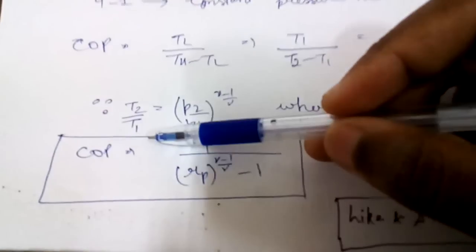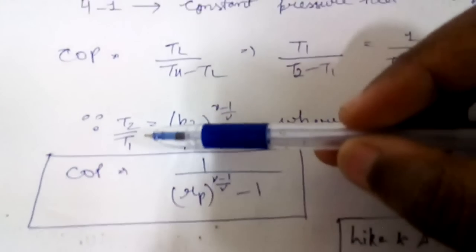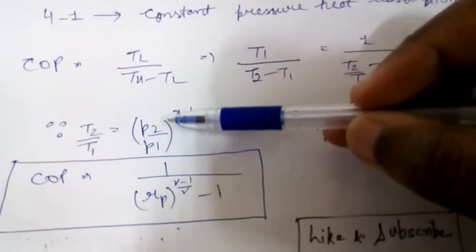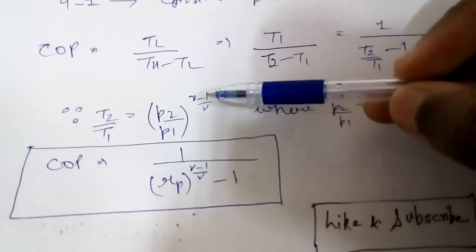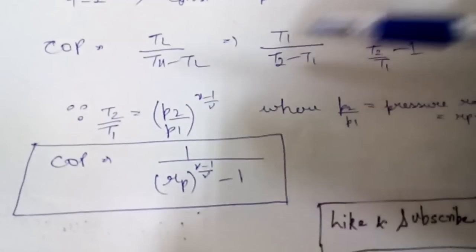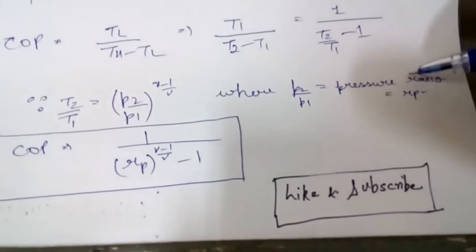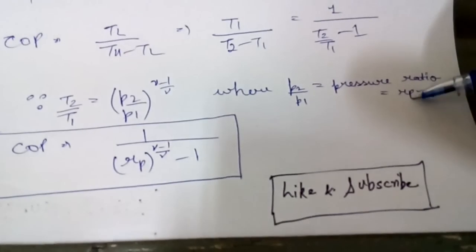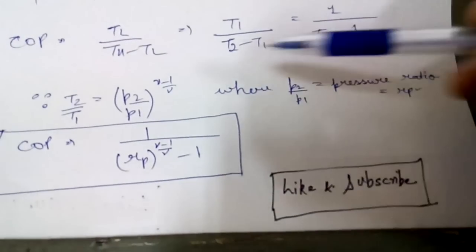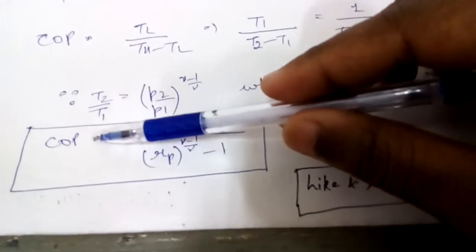And by this relation for isentropic process, T2 by T1 equals P2 by P1 to the power gamma minus 1 upon gamma. Where P2 by P1 is termed as pressure ratio, denoted by Rp.